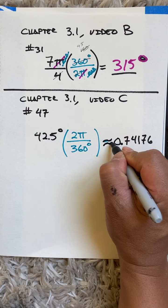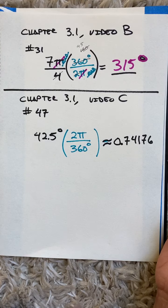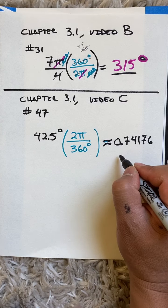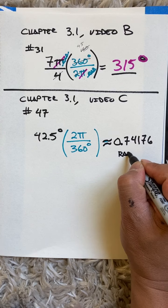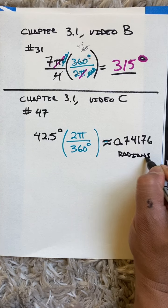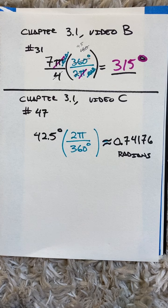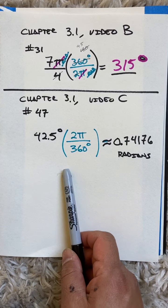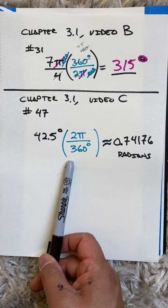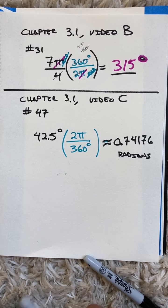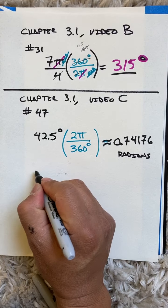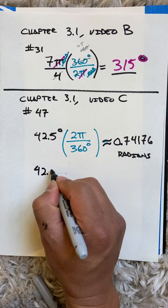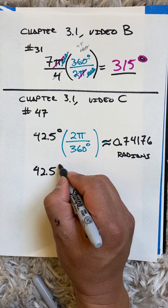Okay, now just as a shortcut note, instead of 2π over 360, others like to do just π over 180, which is totally fine. Pi over 180 degrees also works.